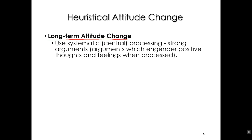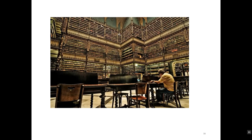All heuristic changes are relatively short-term. So if you want long-term attitude change, you need to use the systematic or central processing route. You need to give people strong arguments that engender positive thoughts and feelings when processed — that will cause positive attitude change that will last. And that's it for the prep lecture. You've got a couple other videos to watch before class, and a couple things to consider before class also. See you in class.